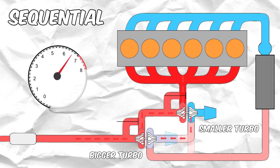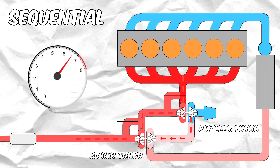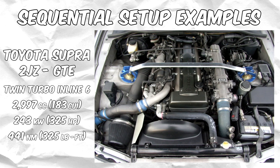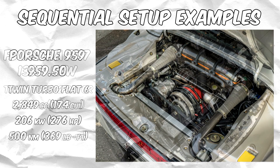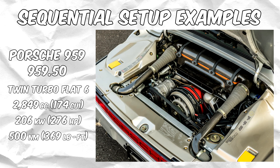However, some systems actually route the smaller turbo into the bigger turbo's turbine wheel, thus feeding the bigger turbo using the smaller one. Some examples of cars with a sequential setup are the Mk4 Toyota Supra, FD RX7, and Porsche 959, which happened to be the first car to use a sequential turbo setup.